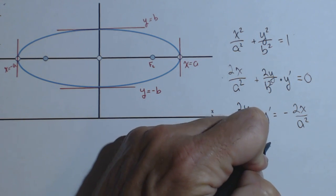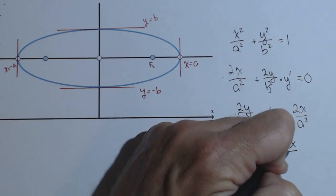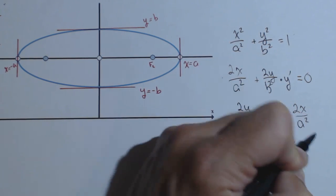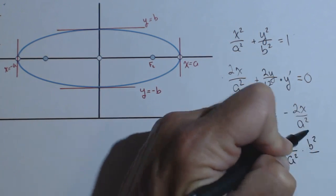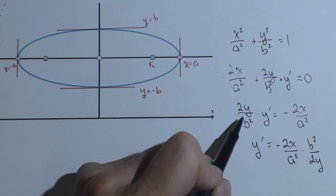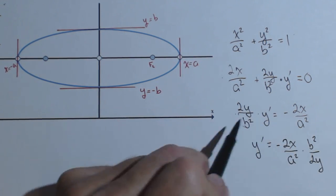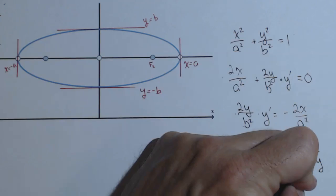And I'm going to multiply both sides by the reciprocal of this guy. So I end up with y prime equals negative 2x over a squared times b squared over 2y. Multiplying by the reciprocal will get this side to cancel out, I just didn't write out that step.